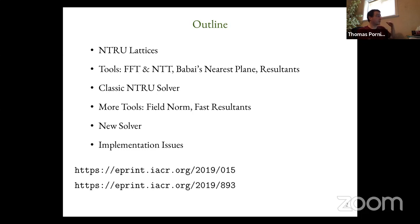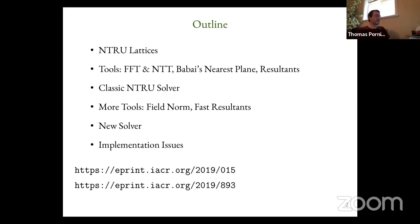I will present some of the tools that are needed: FFT, NTT, Babai's Nearest Planes, and some algebra — resultants of polynomials. Then I will present the classic NTRU solver and why it works and why it uses a lot of computing resources. Then I'll show how to use some nifty equation games, which have an algebraic interpretation as field norms, and that allows us to save a lot of space — improving by a factor of more than 100.